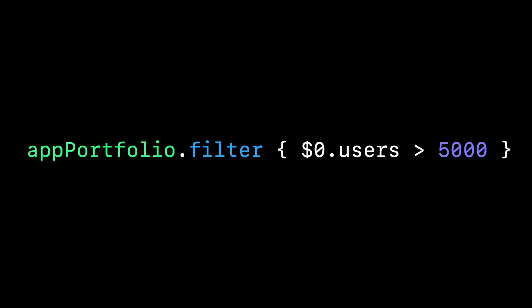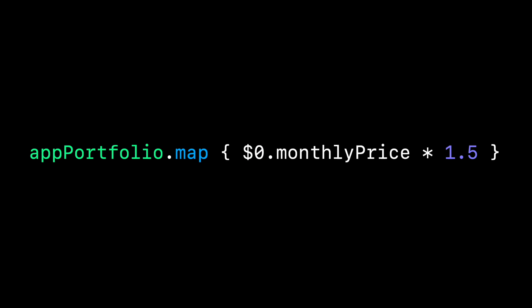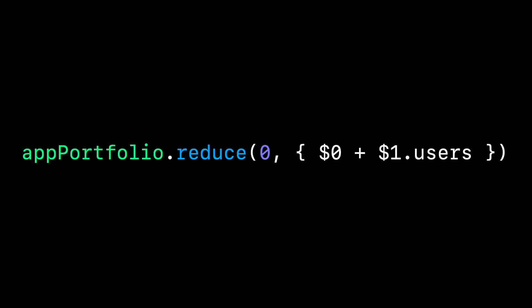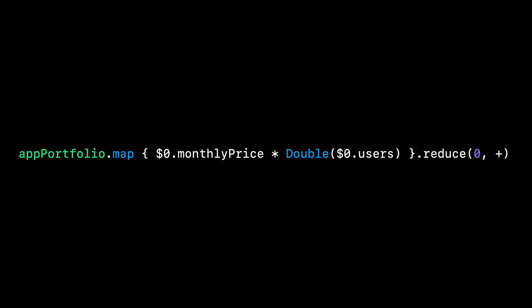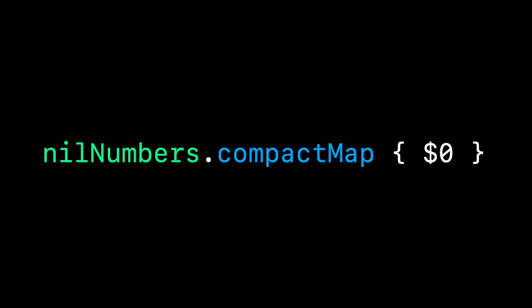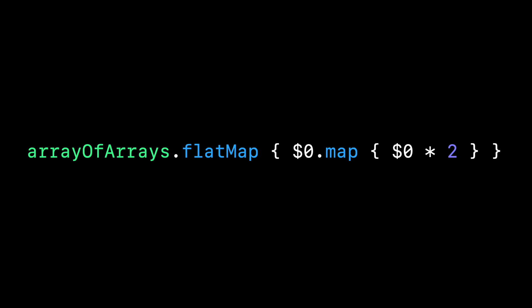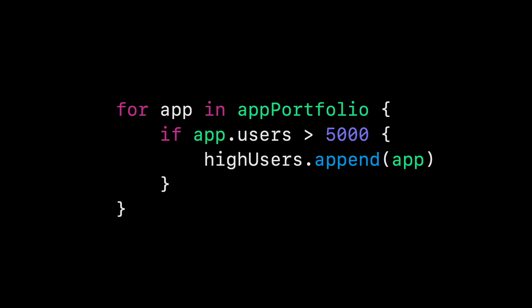We're talking about filter, map, and reduce. I'll show you how to chain them together. Then we're going to talk about compact map and flat map. A good way to think about these higher order functions is they are shorthand syntax for a basic for loop.